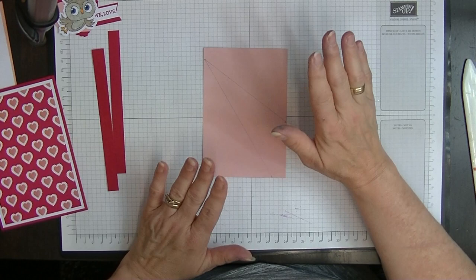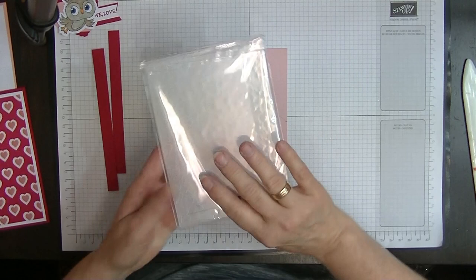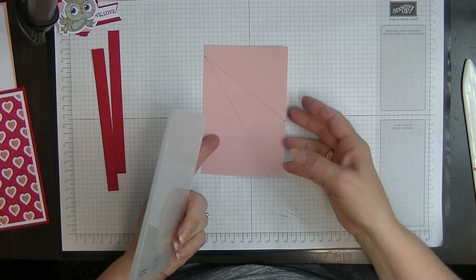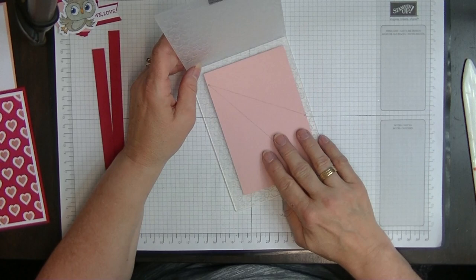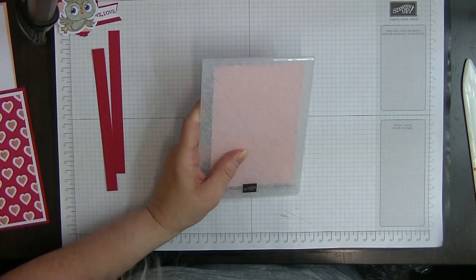You can just cut this and have it plain or you can emboss this. I'm going to emboss mine. I have an embossing folder here from my mum's stash. I'm going to pop that in my embossing folder and pop it through the embossing machine. Here we are, we've done that.